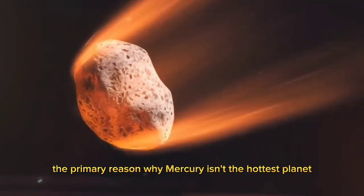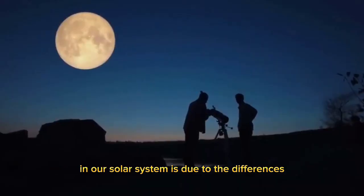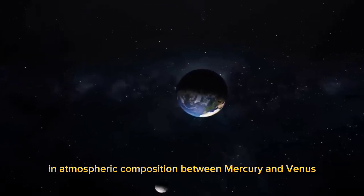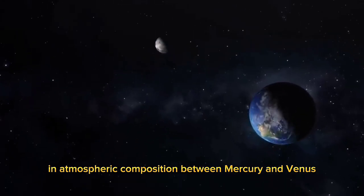The primary reason why Mercury isn't the hottest planet in our solar system is due to the differences in atmospheric composition between Mercury and Venus.